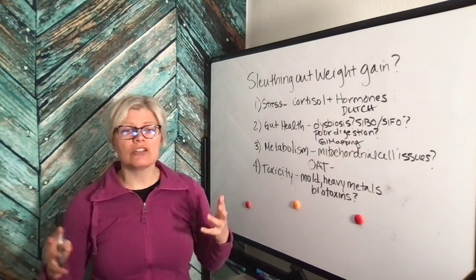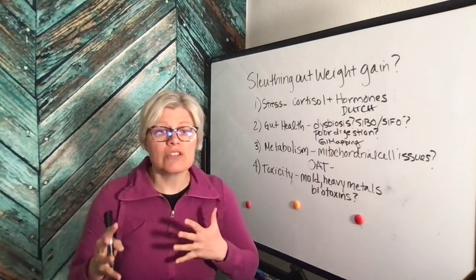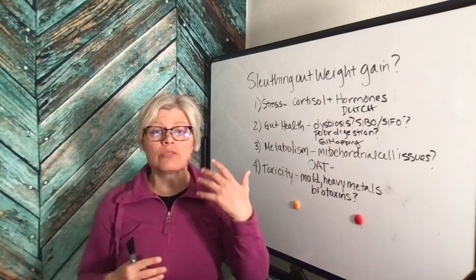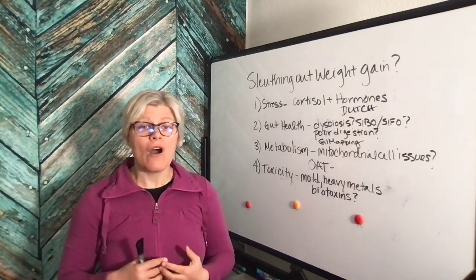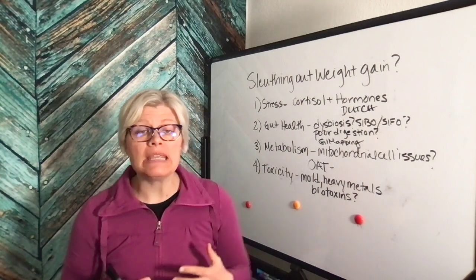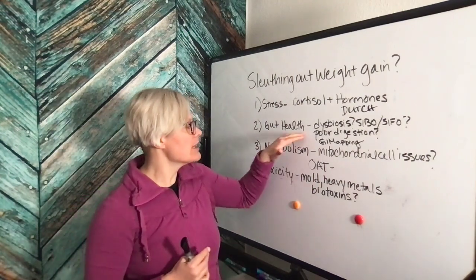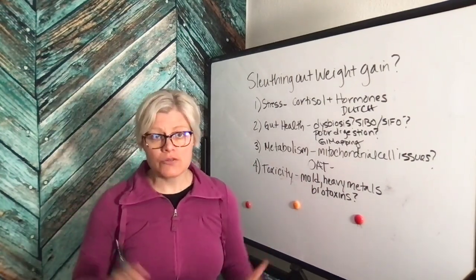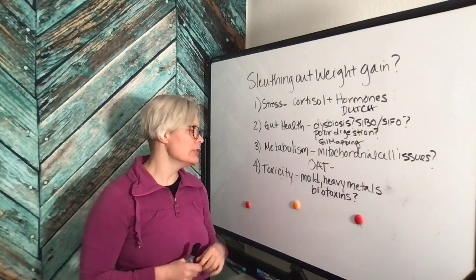Organic acid testing will tell you what's going on with your mitochondria. Are they sick? Are they having trouble making energy? Are they having trouble burning fat, utilizing protein, or having trouble in general because they're malnourished? Meaning you're not getting food from the gut to your cells. That's a huge factor as well.